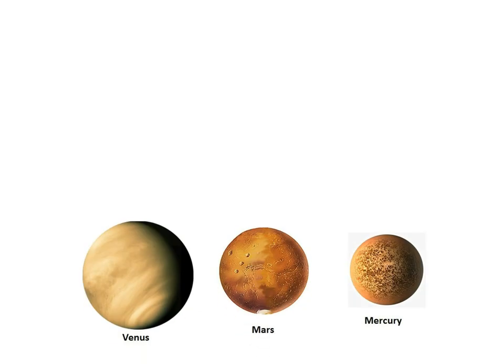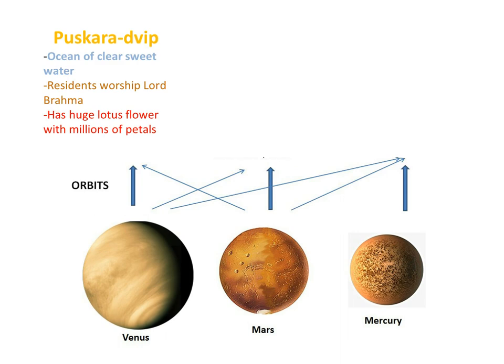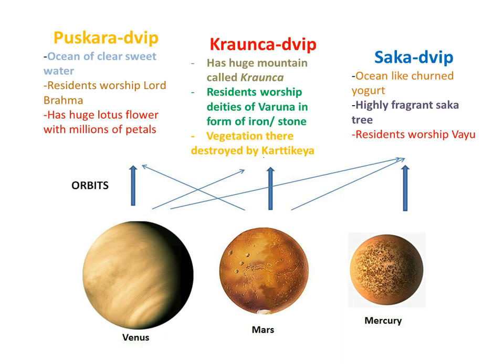This next section here, we have to definitely have seen part one to understand this. However, the geocentric orbits of Venus, Mars, and Mercury here do indeed have a relationship with Plaskudreep, Sakudreep, and Kronchudreep. Here you can see on the screen many different attributes of those lands.